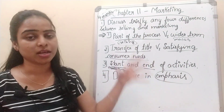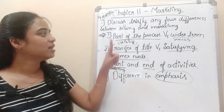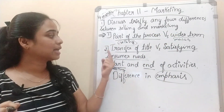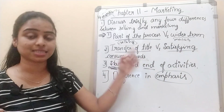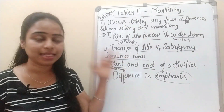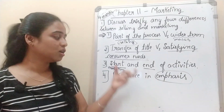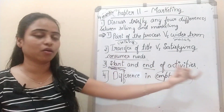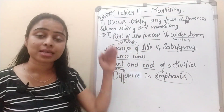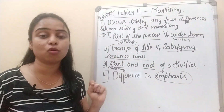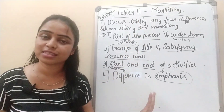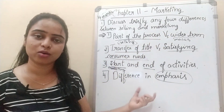To recap the four differences between selling and marketing: first, selling is only a part of the process while marketing is a wider term. Second, selling is merely connected to transfer of title whereas marketing is related to satisfying customer needs. Third, marketing is the starting of the activity whereas selling comes at the end. Fourth, selling focuses on bending the customer to the product whereas marketing focuses on identifying and satisfying consumer needs.